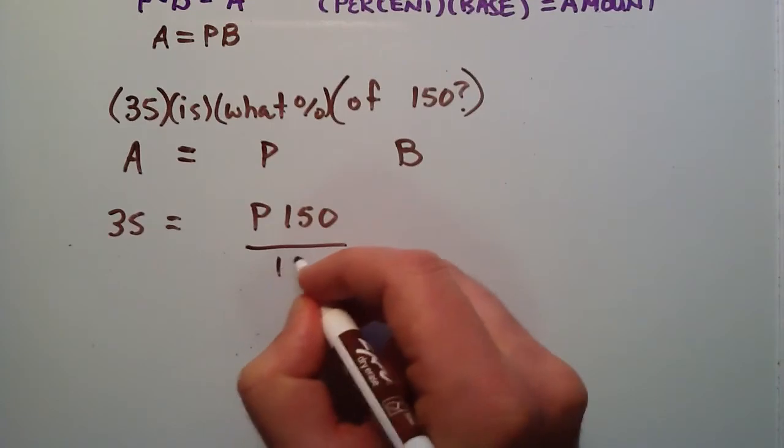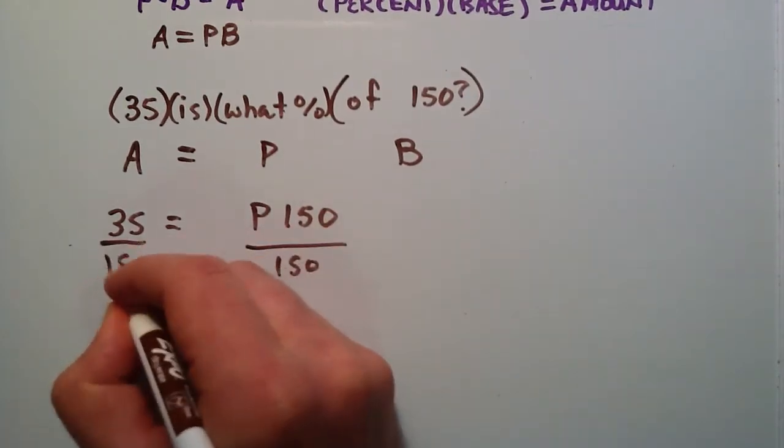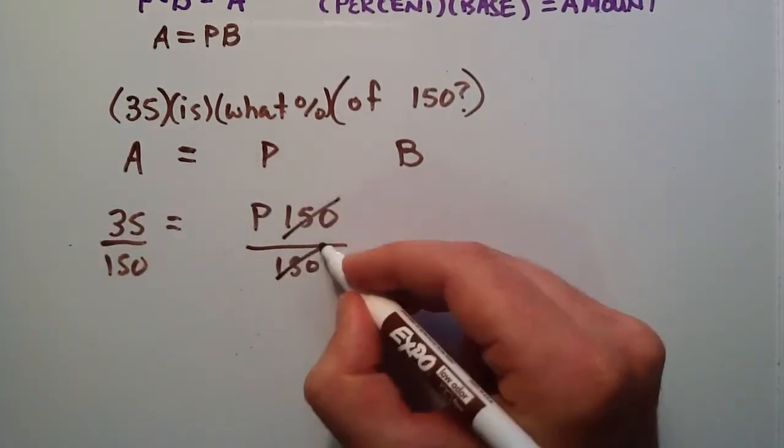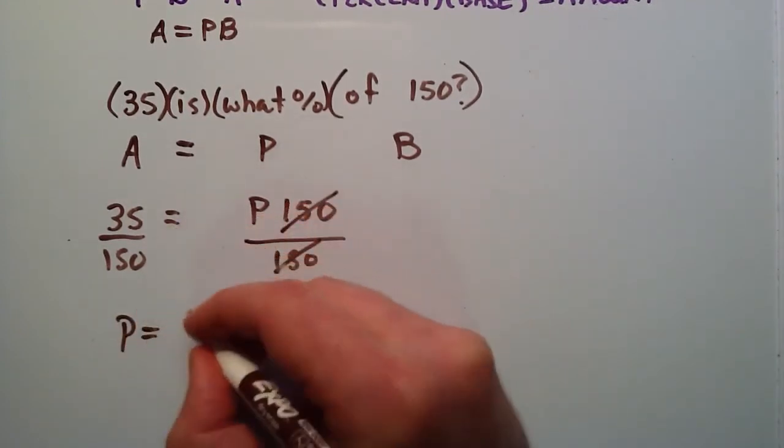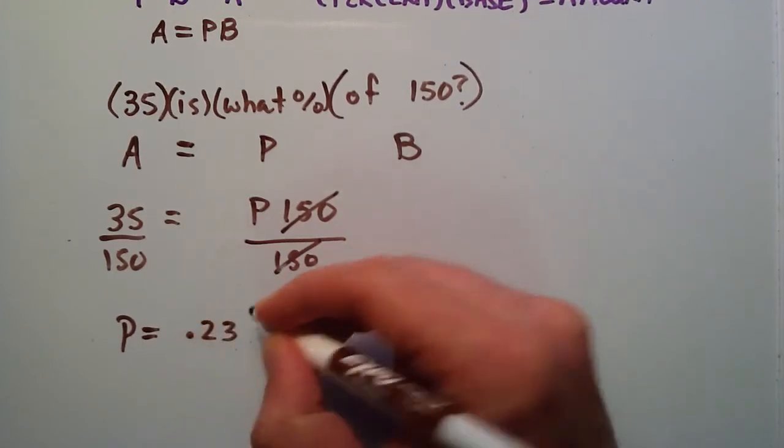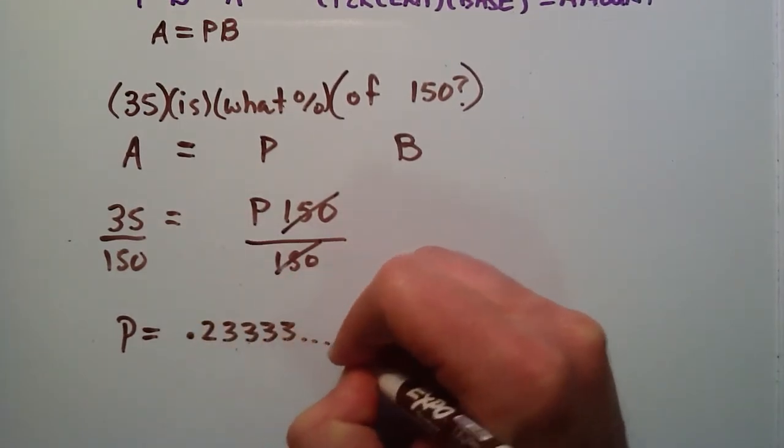Divide each side by 150. 150 over 150 cancels, giving us P equals 35 over 150 gives us 0.233, and all these 3's keep on repeating.